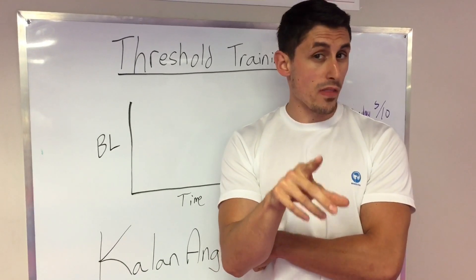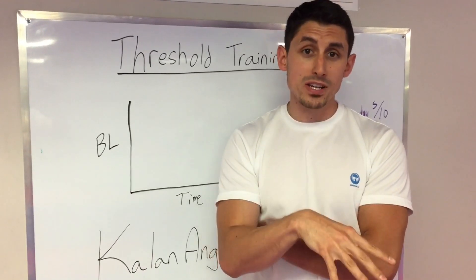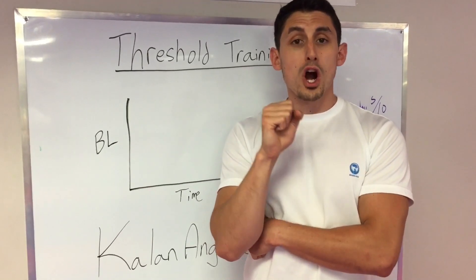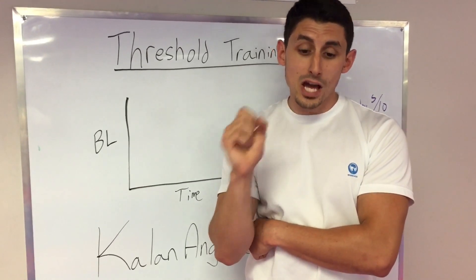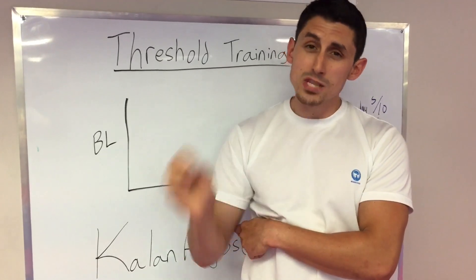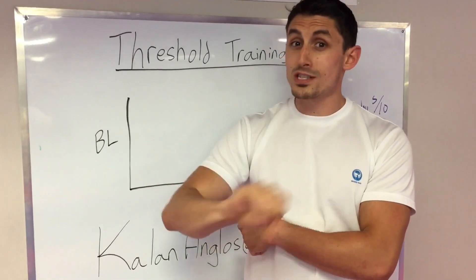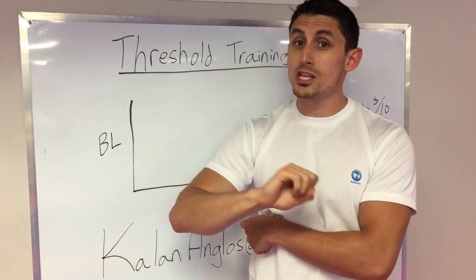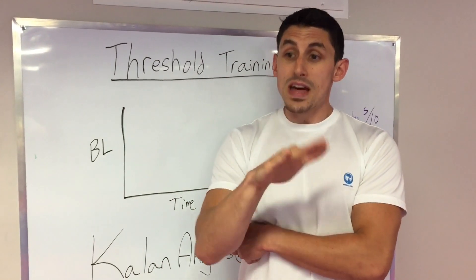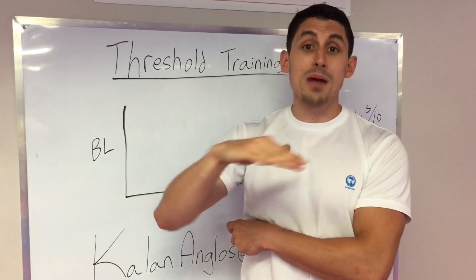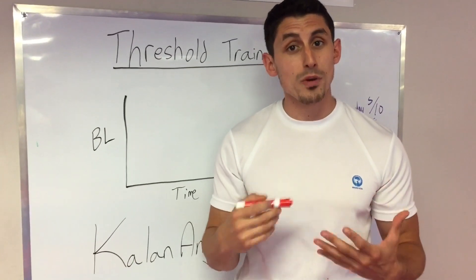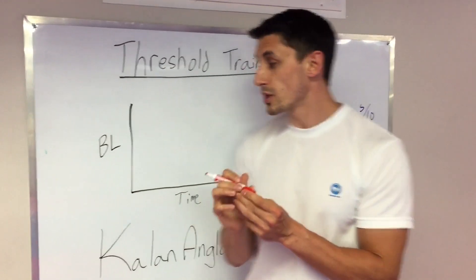Take a look at that video if you haven't already, but today what I want to talk about is a point in our training where our blood lactate accumulates so much that we can't get rid of it. As we accumulate blood lactate we're constantly getting rid of it and using it, but as it builds up over time it affects our performance — that's called the anaerobic threshold or the blood lactate threshold.